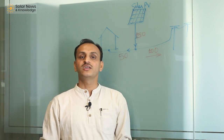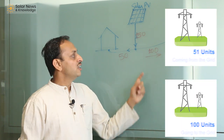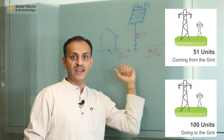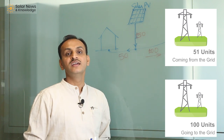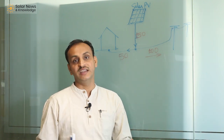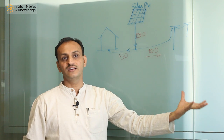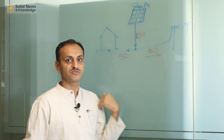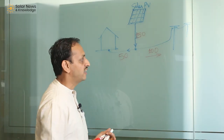When your consumption is higher than generation, both the electricity coming from the grid and the electricity going to the grid are at the same rate. Therefore, if you are banking 100 units to the grid, you can take back 100 units from the grid at the same rate. But in gross metering, it is not like that.